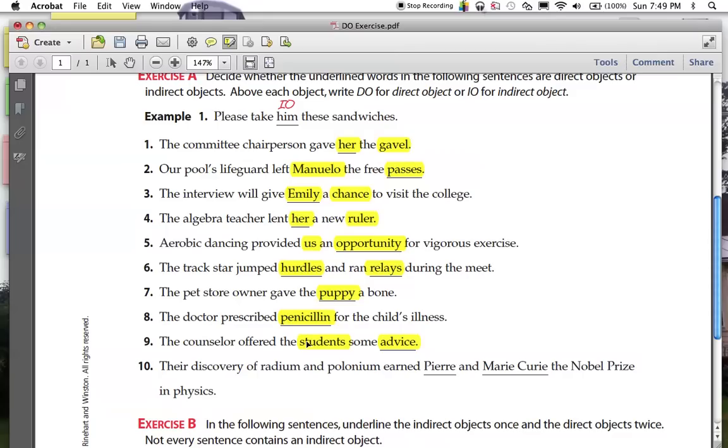And finally, their discovery of radium and polonium earned Pierre and Marie Curie the Nobel Prize. Discovery is a subject. Earned is the verb. What was earned? The Nobel Prize. That's a direct object. Who was it earned two or four? Pierre and Marie. So they are indirect objects.